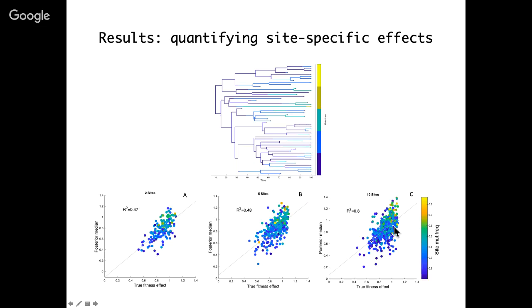These correlations are pretty strong with fewer sites, but as we increase the number of sites to like 10, the correlation between estimated and true fitness effects does weaken. We think this is largely because as we include more sites, the complexity of the genetic background increases. Single mutations always fall in genetic backgrounds containing other mutations, making it harder to estimate fitness effects of particular mutations the more complex the genetic background.